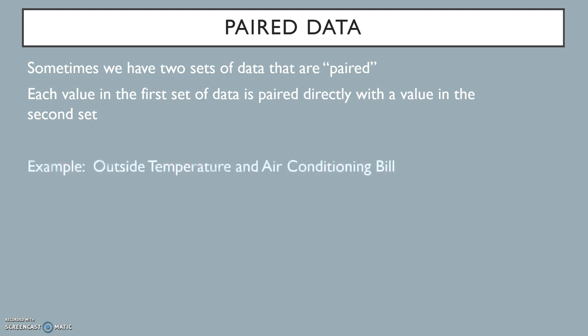For example, maybe we collected data where every day we recorded what the outside temperature was and we also recorded how much we spent on air conditioning that day. These two datasets, the temperature and the air conditioning bill, are paired because each temperature is paired with exactly one air conditioning bill that occurred on the same day.